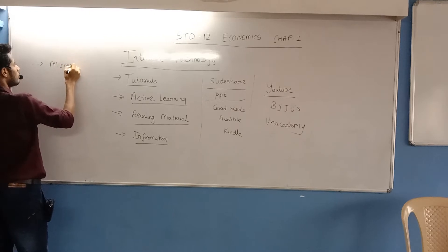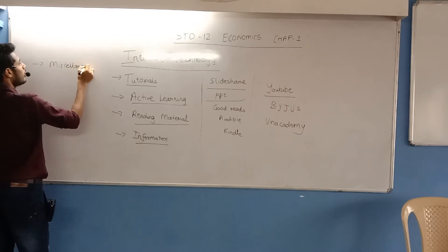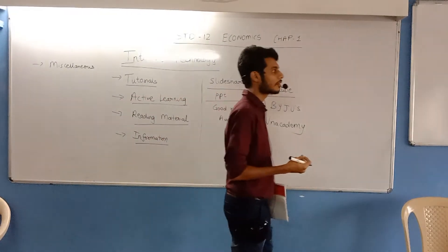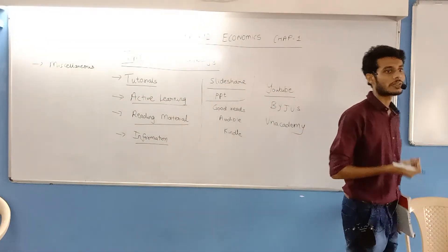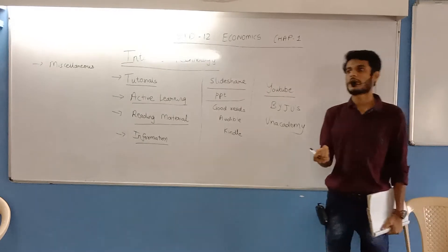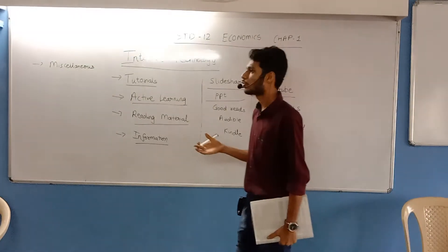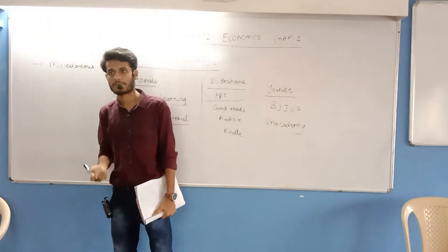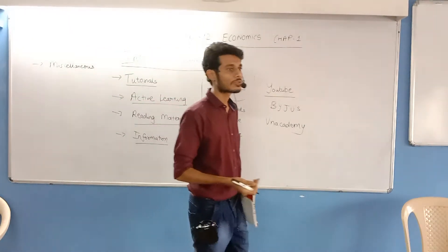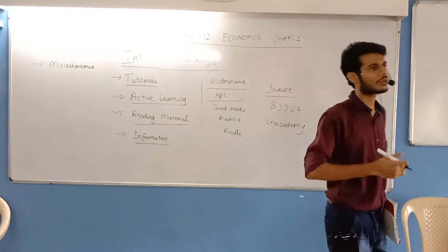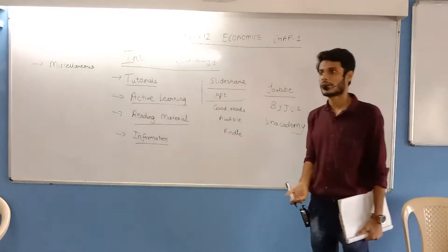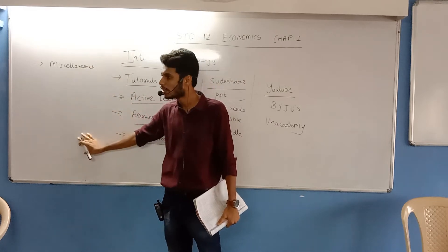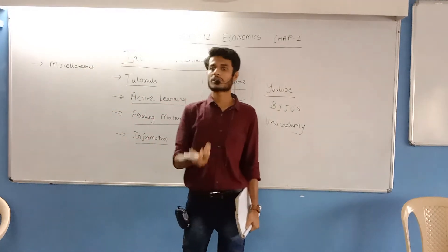The next point says you can search for miscellaneous data. It means that if you are impressed by some author, statistician, or great public figure, and you want to search what all activities they had done in their life, what all quotes they have written, what all books they have written, then you can search online for such miscellaneous data as well.